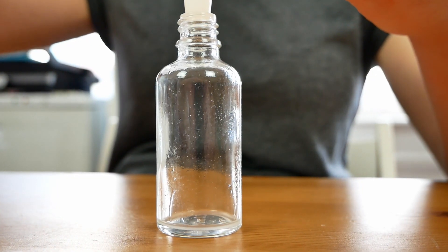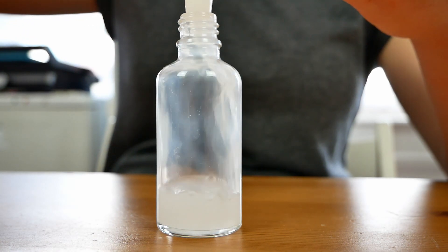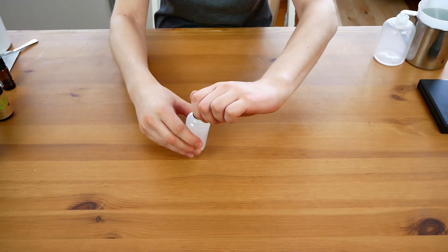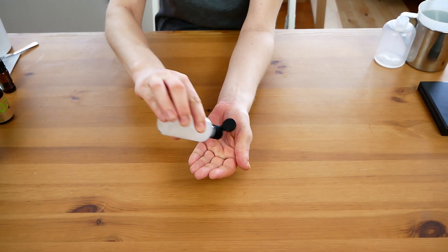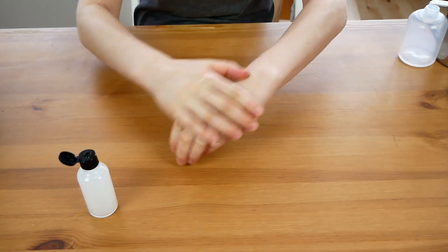Then pour into a bottle with an atomizer or some other dispenser. The liquid created has an alcohol content of around 75% which is 150 proof so it effectively disinfects our hands.